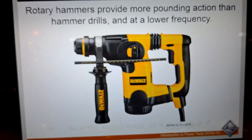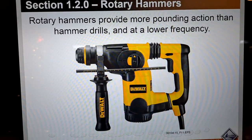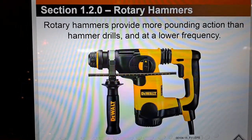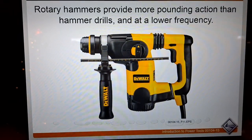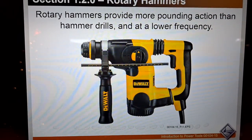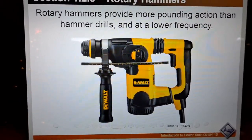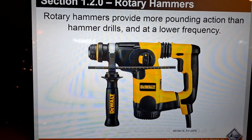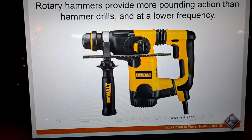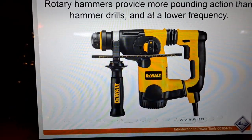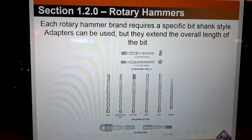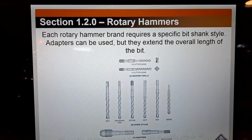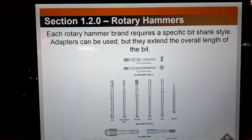Rotary hammer drills provide more pounding action than hammer drills at a lower frequency. This is what you use when drilling into concrete. We sometimes drill three-inch, four-inch, or five-inch holes right into concrete for pipe. When holes get bigger than that, we typically have a concrete company come out and do that work.